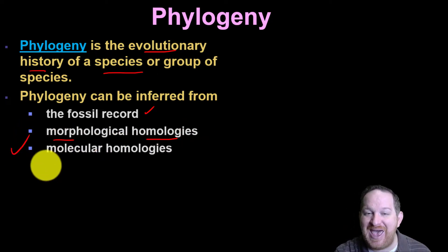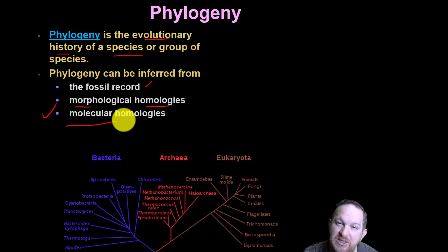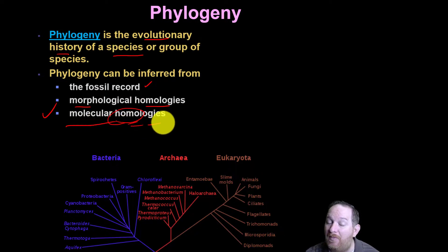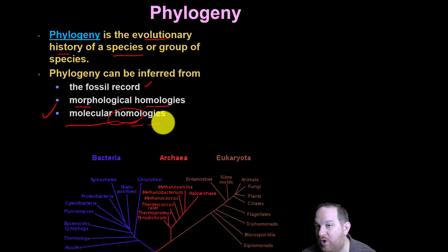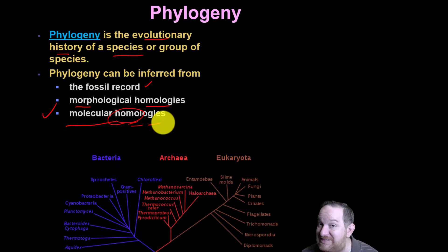Today we pretty much use molecular homologies to really show us how to make these trees. When we say molecular homologies, we're looking at the DNA and the proteins to see how similar they are to each other. We can group organisms based on how similar their DNA is. Obviously, if an organism is 99% similar in DNA to another organism, they're probably pretty closely related — they probably evolved more closely together.